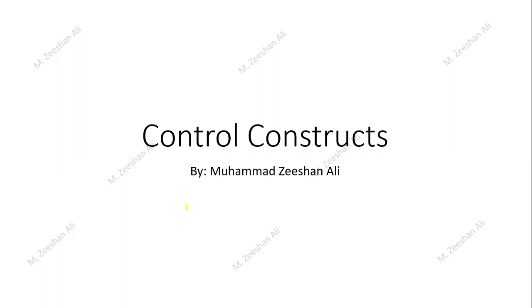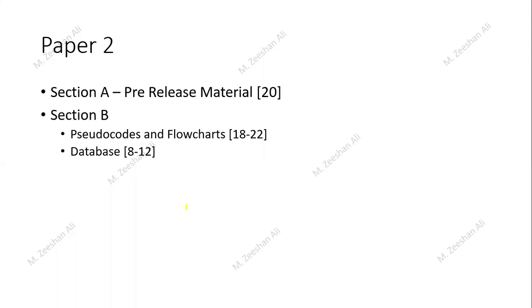Today we are going to learn about control constructs, but before moving towards today's lesson I want to discuss the O-Level Computer Science Paper 2. Paper 2 has two sections. Section A is based on pre-release material that is given to the student before the examination so they can write pseudocode, make a program, run it, and check whether it's working. The 20-mark questions in Section A are all from the pre-release material.